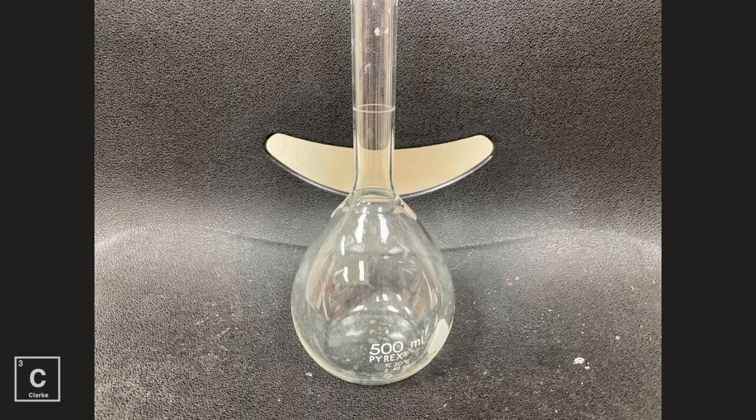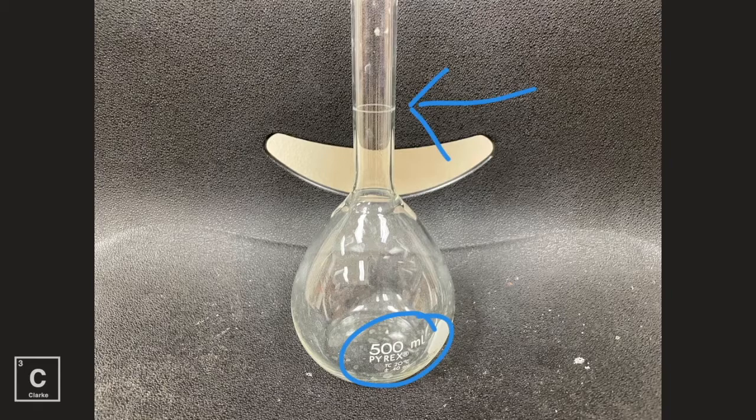When we're making solutions, we normally use a volumetric flask. That's what you're seeing in front of you right here. The volumetric flask only has one measure line. You see that? That's why it's used for making solutions. We're not measuring anything but 500 milliliters.